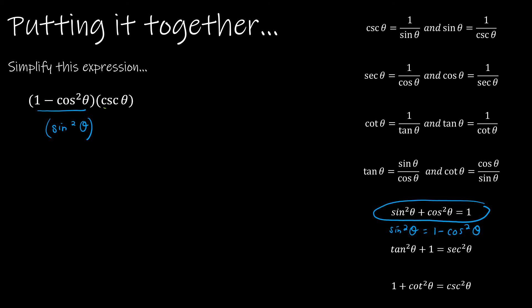For cosecant theta, I'm going to say cosecant is the same as 1 over sine theta. So now, if I do just a little bit of reduction, I can see that this is sine theta times sine theta, which is sine squared theta. So really, I can reduce one of those, and I'm left with simply sine theta.